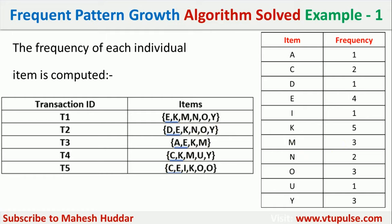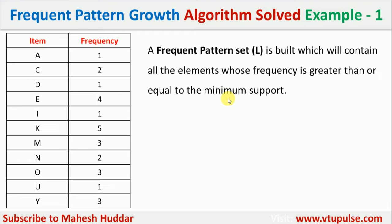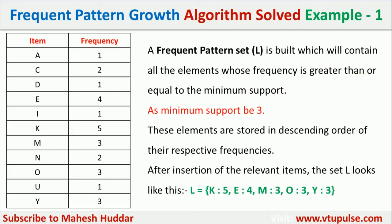Once we write the frequency of every item, we need to find the frequent pattern set L, which is built using all elements whose frequency is greater than or equal to the minimum support. The minimum support is 3, so we identify all items with frequency 3 or more. For example, E has frequency 4, so it is included. The frequent pattern set contains E, K, M, O, and Y.